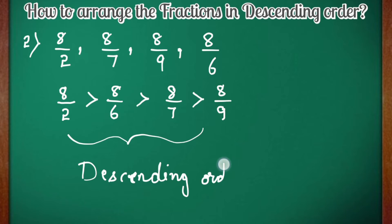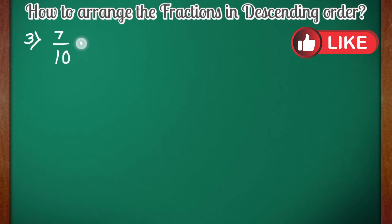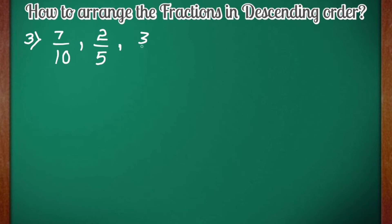To write fractions in ascending or descending order, either the numerators should be the same or the denominators should be the same. Now, if neither the numerators are the same nor the denominators are the same in the given fractions, how will you arrange them in descending or ascending order?